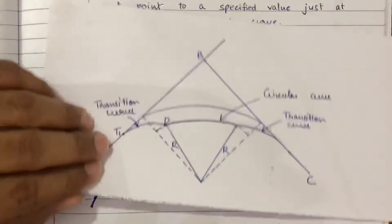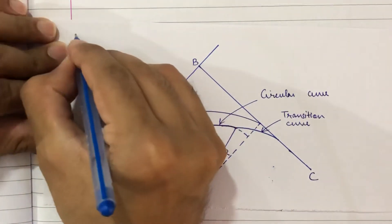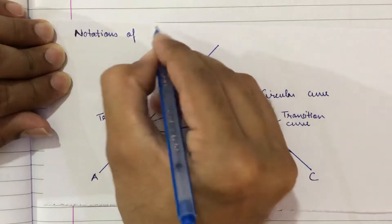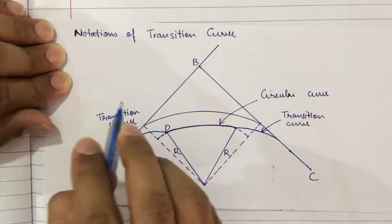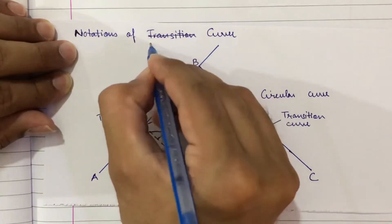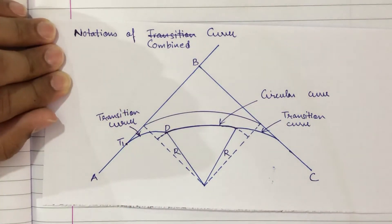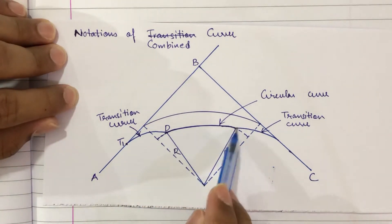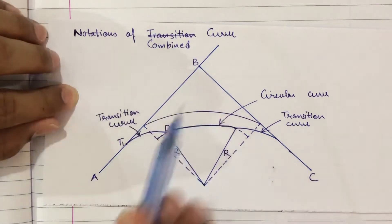Now let us discuss the notations of the transition curve, or you can also call it the notations of the combined curve. This is called a combined curve because it comprises of transition as well as the circular curve. So let us see the notations of the combined curve.